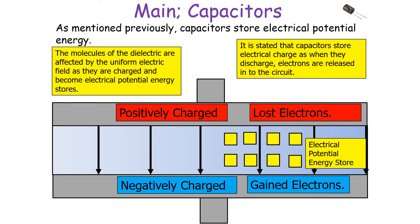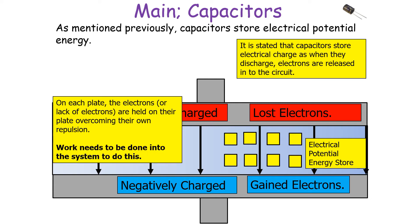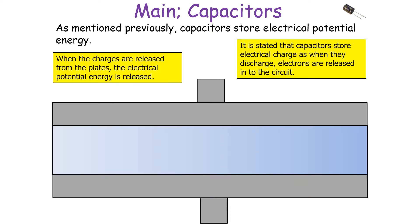Capacitors store electrical potential energy. The molecules of the dielectric are affected by the uniform electrical field as they are charged and become stores of electrical potential energy. On each plate, the electrons or lack of electrons are held on their own plate, overcoming their repulsion to each other as they are like charges. Work needs to be done into the system to do this. This energy is supplied by the power source and stored as electrical potential energy for as long as the charges are held. When the charges are released from the plates, the electrical potential energy is released into the circuit.